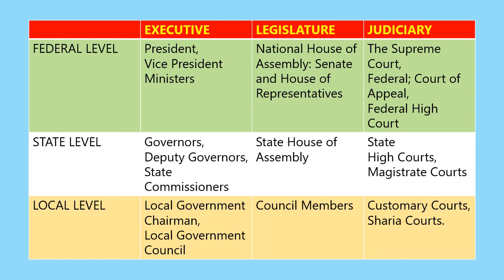Finally, this lesson tells us that each level of the Nigerian government is divided into three arms called the organs of government — the executive, the judiciary, and the legislature. The executive enforces the laws and carries out the policies of the country. The legislature makes the laws, while the judiciary interprets the laws and punishes anyone who breaks them. All arms of government are built on a system of checks and balance, and cooperation among the different levels of government is very important to ensure that all the affairs of the country run smoothly.